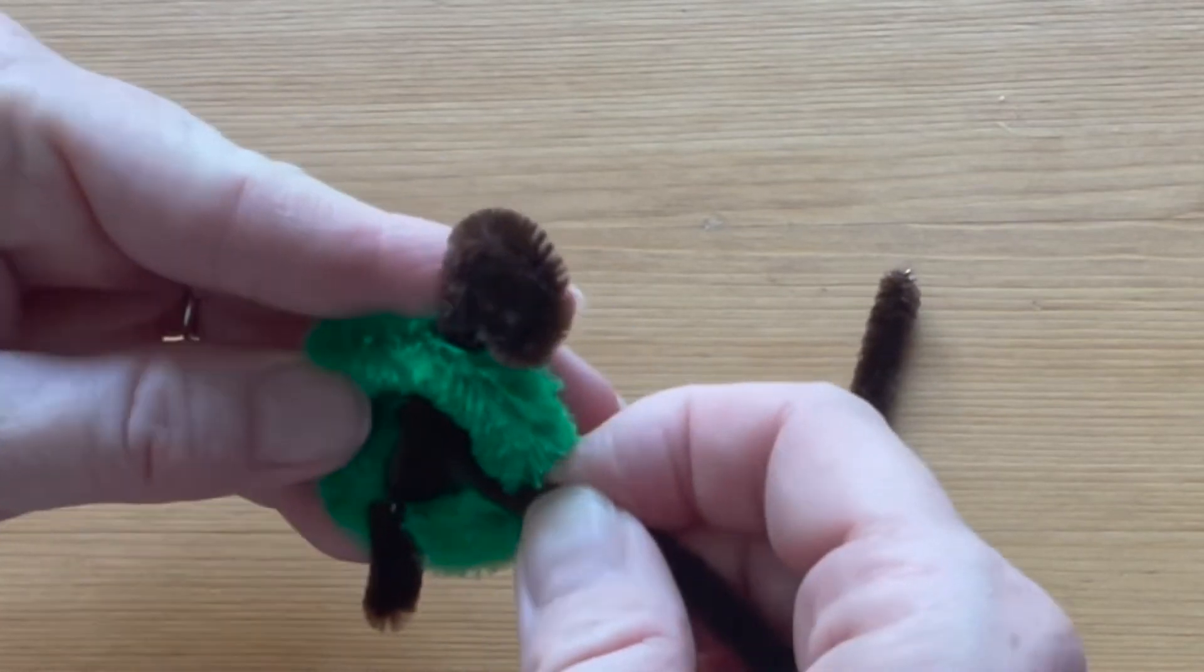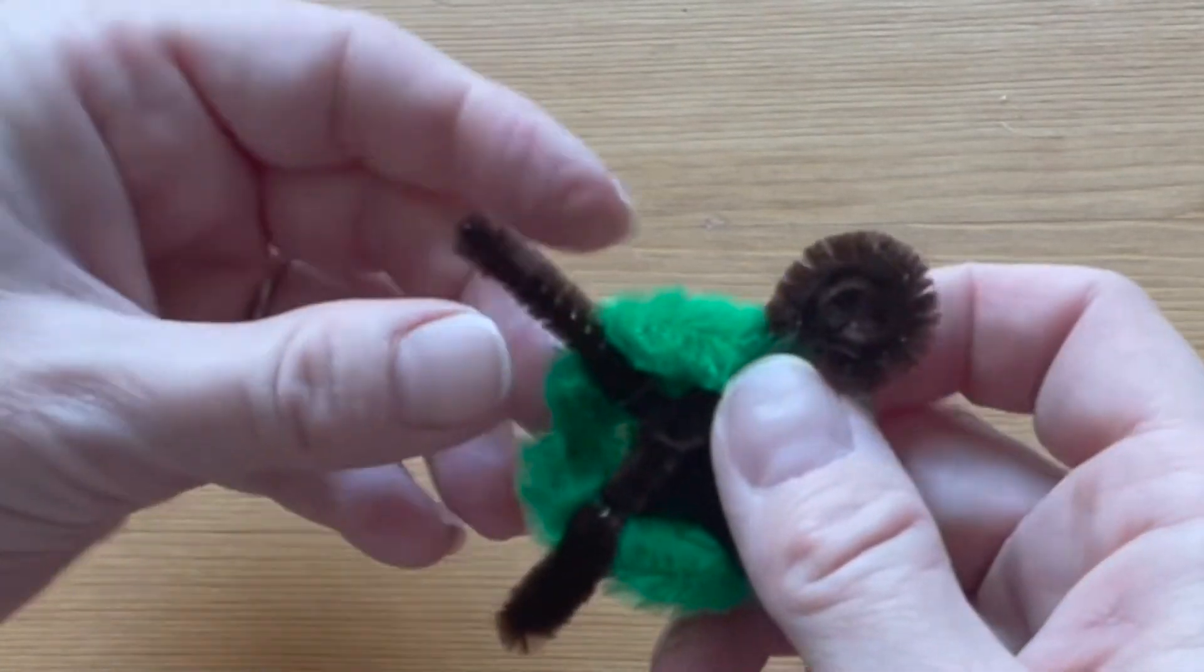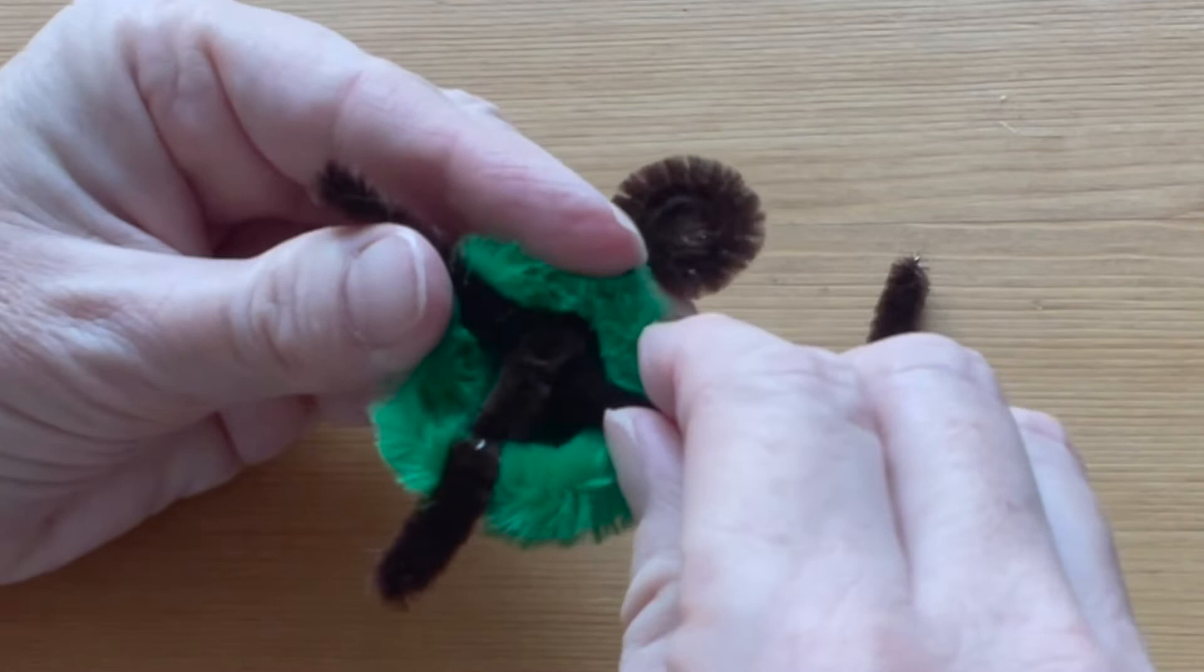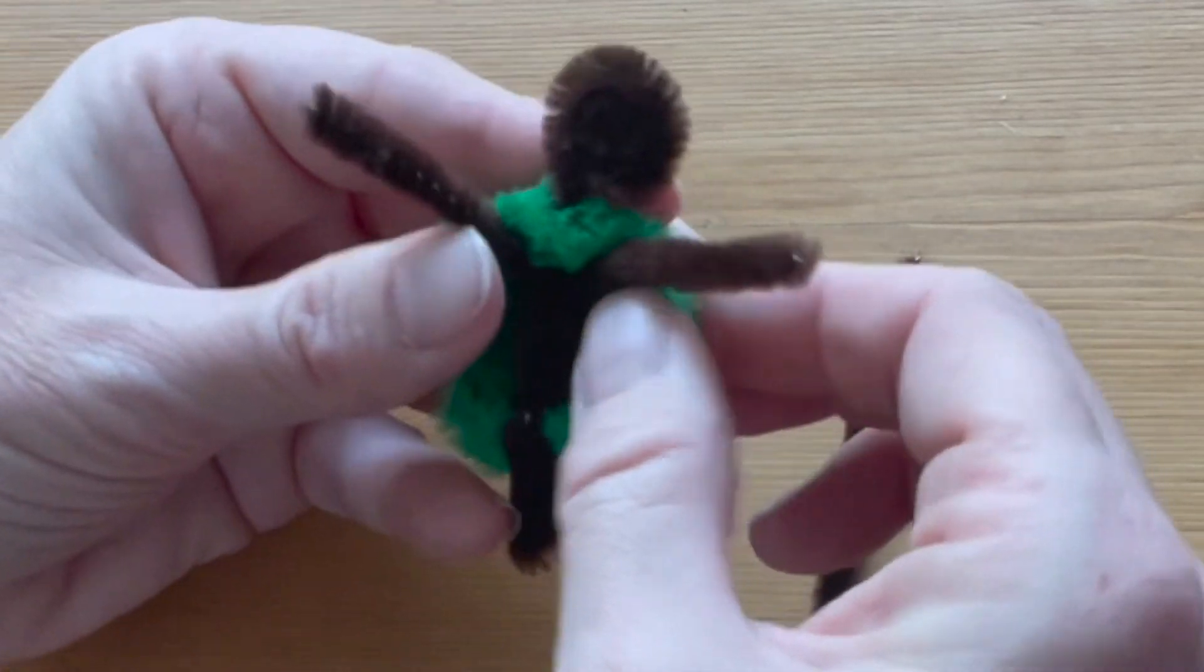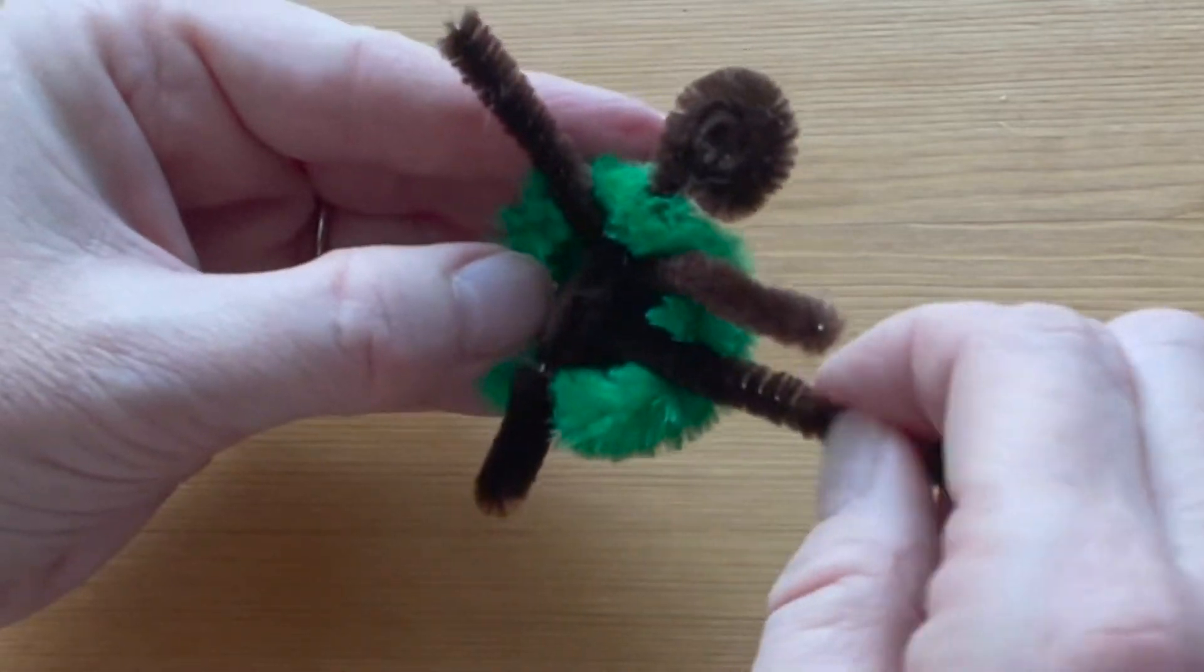Thread one piece of pipe cleaner underneath that middle pipe cleaner and make them even and push them forward just a little bit. Do the same thing for the back legs.